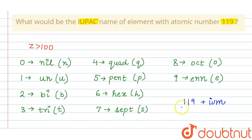So here for 1, it is named as un. And again for 1, it is un. And for 9, it is enn. So it is u-n-u-n-e-n-n. And at the end we will add i-u-m. So this is the IUPAC name for the element with atomic number 119.